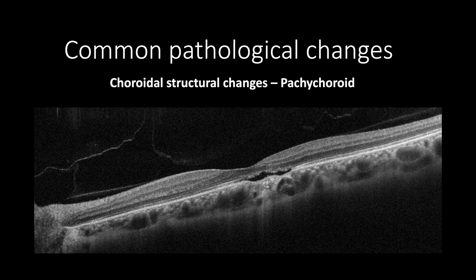Choroidal thickness can vary between individuals, increasing or decreasing in size, and is best imaged using enhanced depth imaging or swept source OCT. Increased thickness along with dilated Haller's layer may be a feature of a spectrum of diseases called pachychoroid, which includes central serous chorioretinopathy, polypoidal chorioretinopathy, and some cases of fibrovascular pigment epithelial detachment. In this case, we can see pachychoroid featuring increased thickness of the choroid and dilated Haller's layer, with focal choroidal excavation leaving an area of subretinal fluid. This can be found in some cases of central serous chorioretinopathy and is less likely to be associated with choroidal neovascularization.